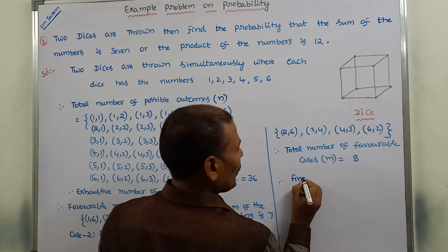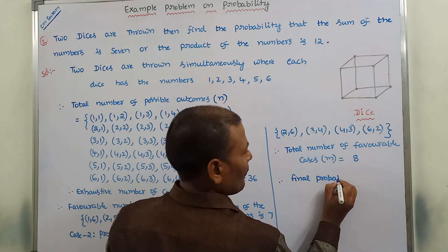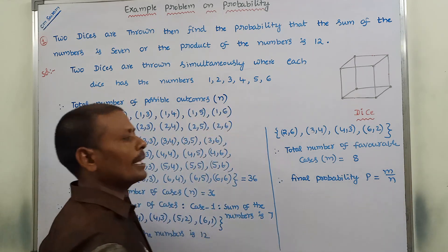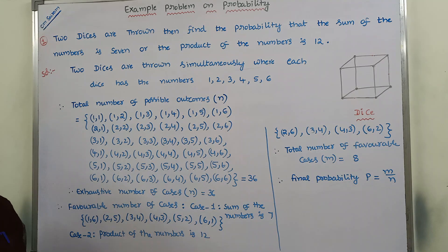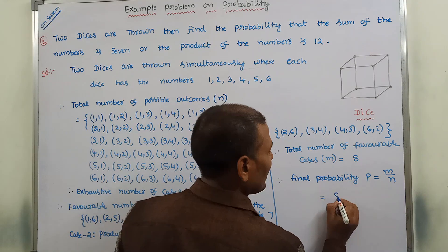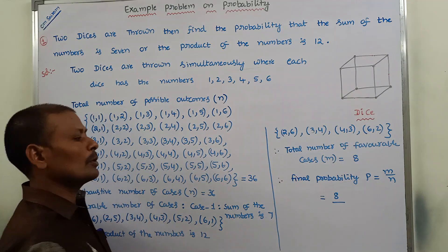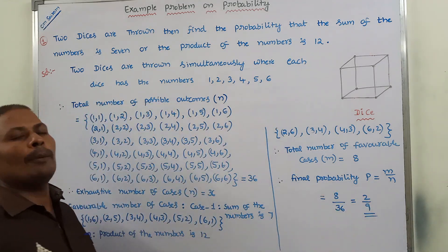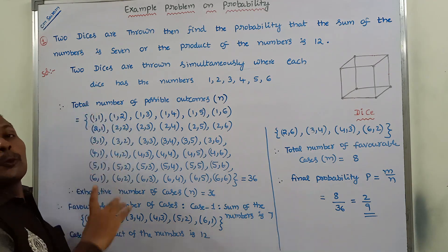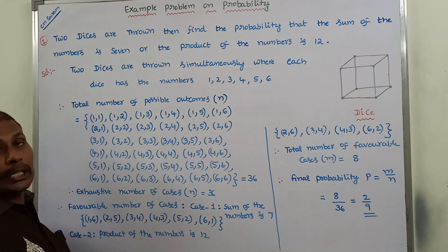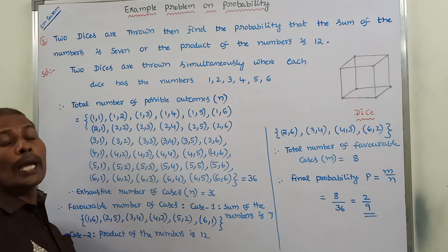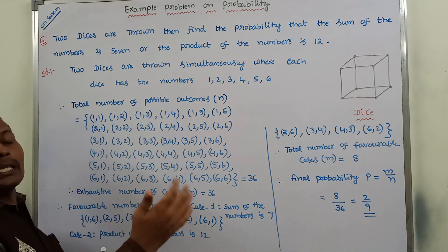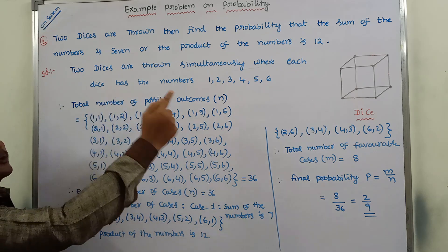Therefore, the final probability P = m/n = 8/36 = 2/9. This is the final probability for satisfying the two conditions — sum of the numbers is 7 or product of the numbers is 12 — when throwing 2 dice simultaneously, where every die has the numbers 1, 2, 3, 4, 5, and 6. In this way we solve the problem.